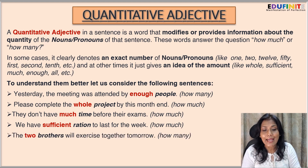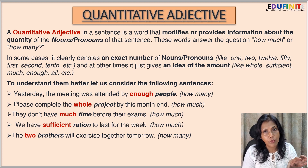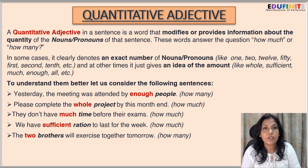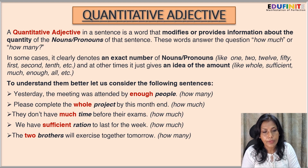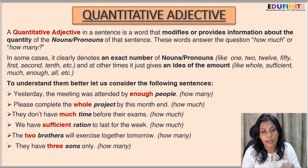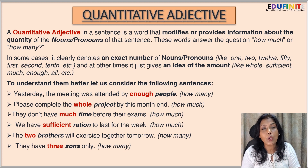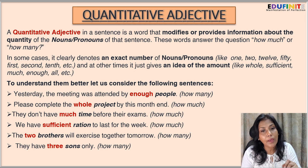'The two brothers will exercise together tomorrow.' Here the number has been specified by the word 'two,' which modifies the noun 'brothers.' So how many brothers? Two brothers — 'two' is the quantitative adjective. Similarly, 'They have three sons only' — 'three' is the quantitative adjective modifying the noun 'sons.' How many sons? Three sons.